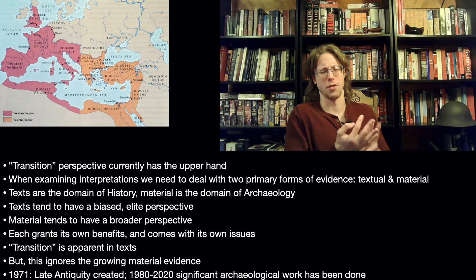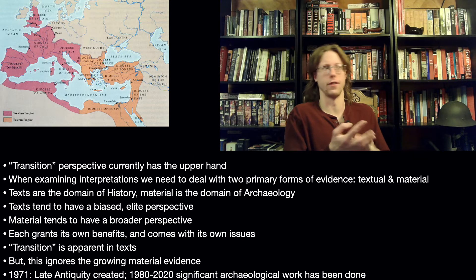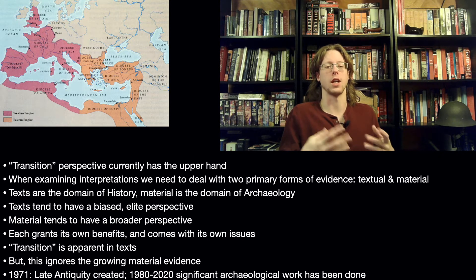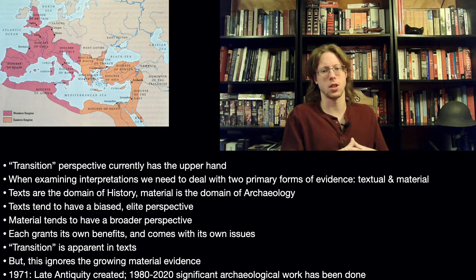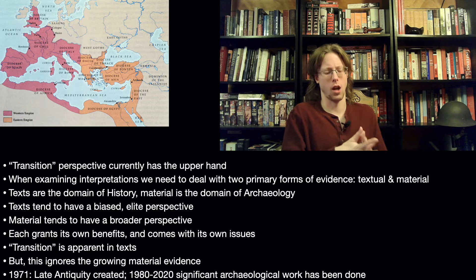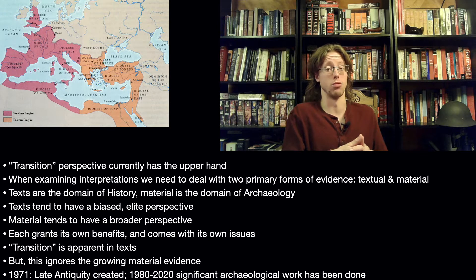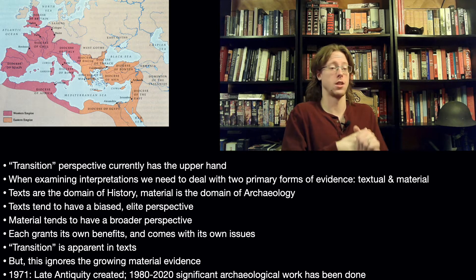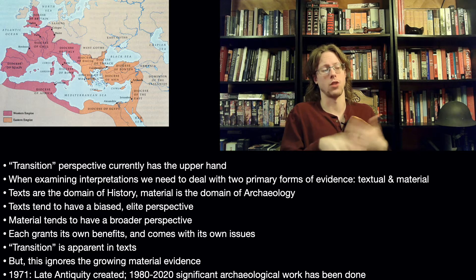The transition view — the continuity of Christianity, aristocratic culture, that stuff — is apparent in the texts. But this ignores, or at least doesn't fully take into account, the growing material evidence. So why has there been a growth in recent decades of material evidence? In 1971, Peter Brown writes The World of Late Antiquity and kind of creates this whole field of late antique studies.